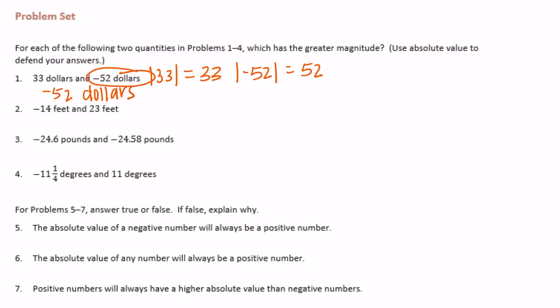Negative 14 feet and 23 feet. The absolute value of negative 14 is equal to 14. The absolute value of 23 is equal to 23. So the one with the greatest magnitude is 23 feet.